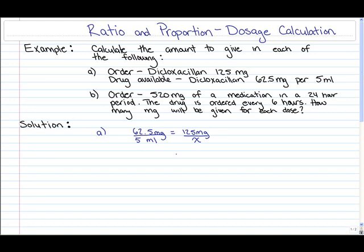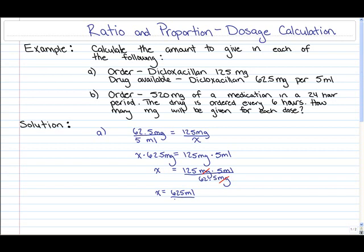Now if we just cross multiply and solve for X, that is X times 62.5 milligrams and on the right hand side 125 milligrams times 5 milliliters. Now keep solving for X, divide everywhere by 62.5 milligrams. 125 milligrams times 5 milliliters all divided by 62.5 milligrams. The milligrams will cancel each other out and this would reduce to 625 milliliters divided by 62.5, which then reduces to 10 milliliters.